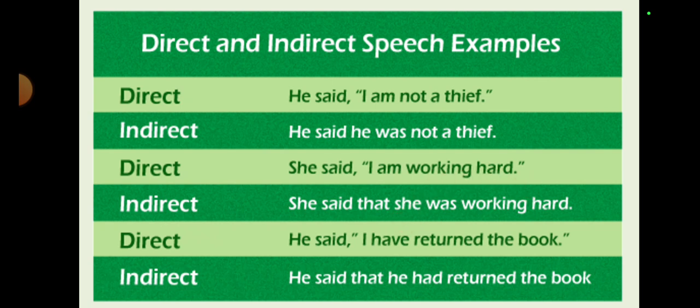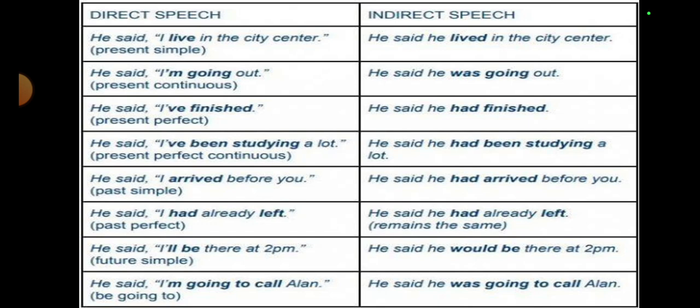I hope these three examples are clear. Few more examples here. Simple present tense is given, we will change it into simple past. I into he, so we will write: I am going out, present continuous, he was going out, past continuous. I have finished, present perfect, he had finished, past perfect. I have been studying a lot, he had been studying a lot, present perfect continuous into past perfect continuous. I arrived, this is simple past, it will go into past perfect, he had arrived. I had already left, it is already changed, the past perfect already.